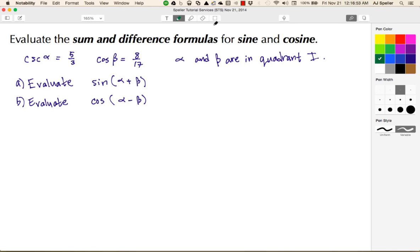Welcome back to SCS. In today's video, we're going to evaluate the sum and difference formulas for the sine and cosine functions. In this problem, we're given that the cosecant of alpha is equal to 5/3, and the cosine of beta is equal to 8/17. We're also told that alpha and beta are in quadrant I.